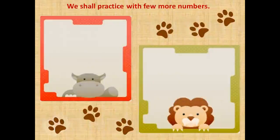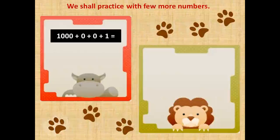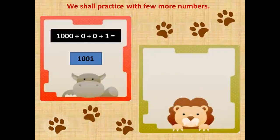Let's practice with few more numbers. We have 1,000 plus 0 plus 0 plus 1. We write it now as 1 in the thousands place,